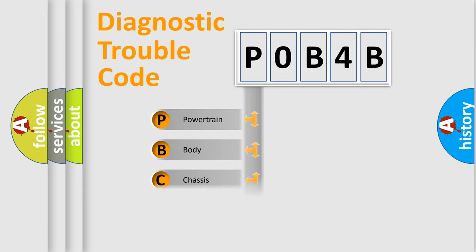Powertrain, Body, Chassis, Network. This distribution is defined in the first character code.